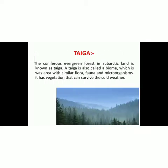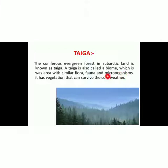The next type of forest is taiga. Taiga is the coniferous evergreen forest in sub-arctic land. Taiga is also called a biome, which is an area with similar flora, fauna and microorganisms. It has vegetation that can survive the cold weather. Taiga is found in sub-arctic land, which is the region in the northern hemisphere with a colder atmosphere.